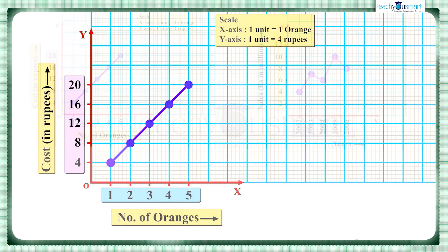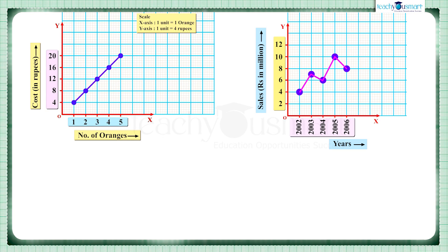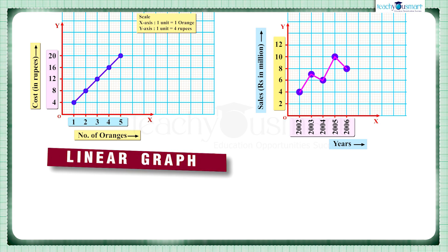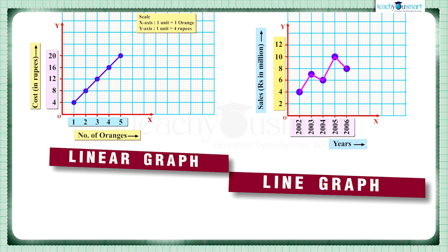Now let's try to understand what is the difference between a linear graph and a line graph. Here the first figure shows a linear graph whereas the second figure shows a line graph. We can see that both of them are made up of line segments but there is a major difference between them. All the points in a linear graph lie on the same straight line, that is the points are collinear. But in a line graph the points may or may not lie on the same straight line. So the points may or may not be collinear.